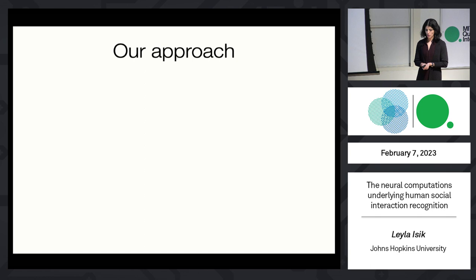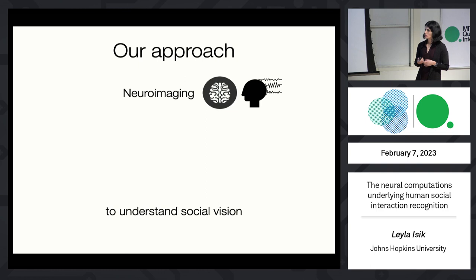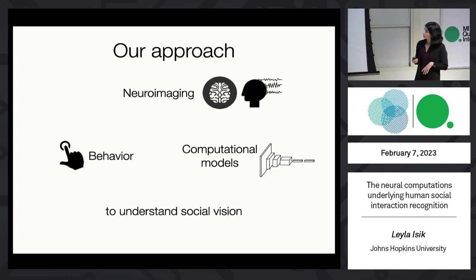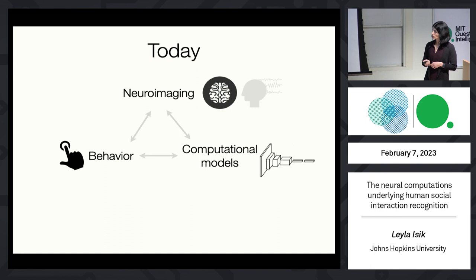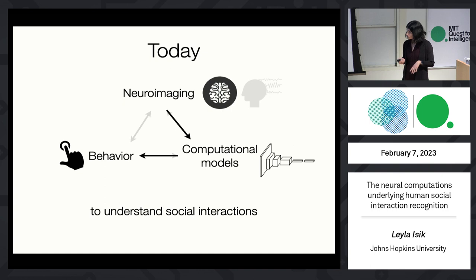The approach we take in our lab is to apply the methods that have been successful in understanding object recognition to understand social vision. We use a combination of high spatial neuroimaging, high temporal resolution imaging, behavior, and computational models, and the comparison of all three types of data. Today I'm going to talk about a series of studies using fMRI data, and then tell you about a computational model they motivated that we use to try to reproduce human behavior.